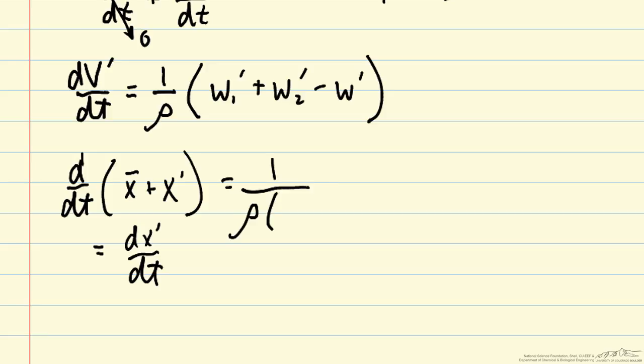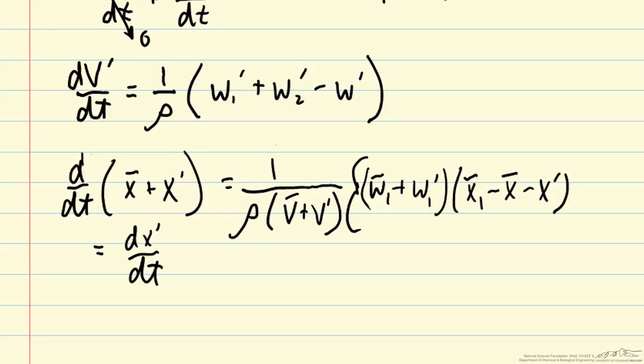Now we have 1 over rho v, but we'll replace that with v bar plus v prime times w1, which is now w1 bar plus w1 prime quantity times x1 bar. We assumed x1 and x2 are both constants, so we do not have a deviation variable for x1, but we do for x, so the outlet mass fraction can still change over time. Then we have an additional term w2 bar plus w2 prime times x2 bar minus x bar minus x prime.